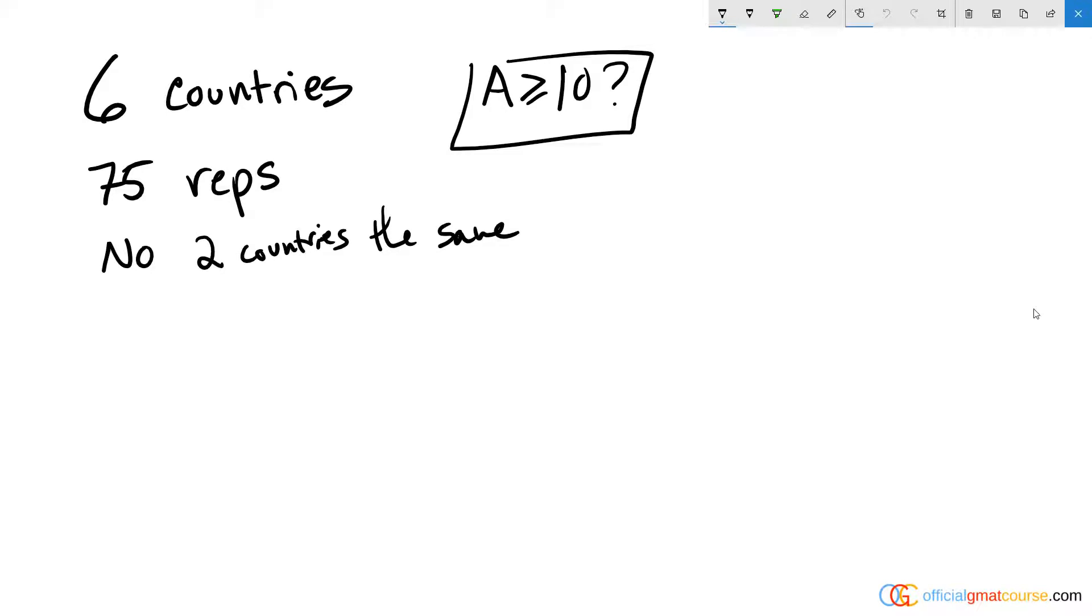So if we look at the question, we know we have a total of six countries sending 75 reps. No two countries can send the same. Now it's saying they're sending reps, so I'm going to assume the minimum value that can be sent is one. And if I know that country A is the second greatest country, that means we have to have a country that is greater than A.